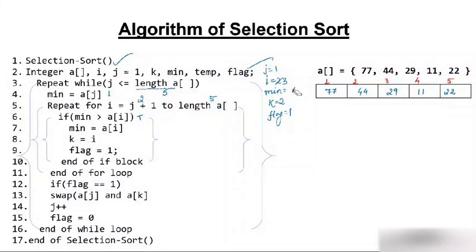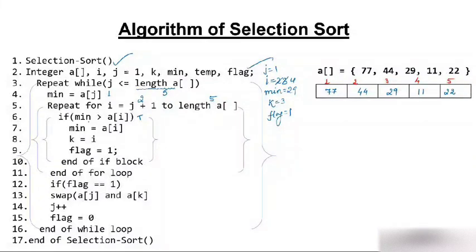After swapping, we increment j to 2 and reset flag to 0. Back at the while loop: is 2 less than 5? Yes. We set minimum = a[2] = 44. We start the for loop from i = j+1 = 3, going till 5. Is minimum (44) greater than a[3] (29)? Yes — condition is true. Minimum becomes 29, k = 3, flag = 1.